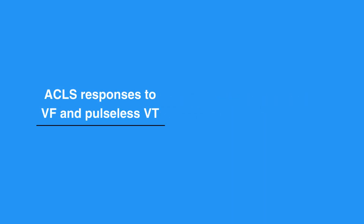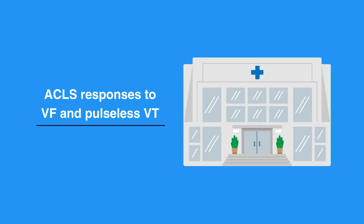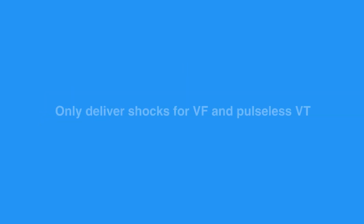ACLS responses to Pulseless VT and VF within a hospital will likely be conducted using a cardiac monitor and a manual defibrillator. Thus, the ACLS provider must read and analyze the rhythm. Only deliver shocks for Pulseless VT and VF. Likewise, antiarrhythmic drugs and drugs to support blood pressure may be used.